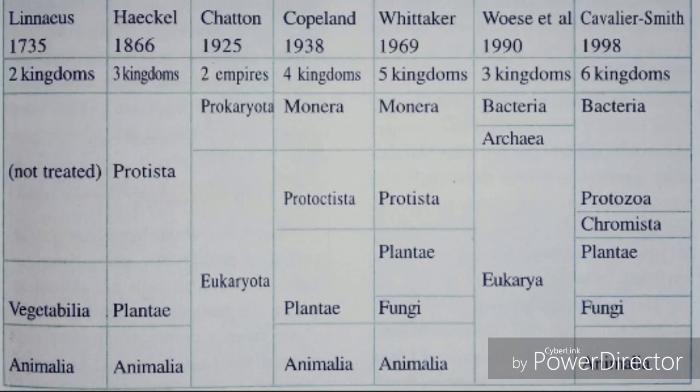Now let us see different classifications done by great taxonomists. The first one, on the extreme left, is the classification given by Carolus Linnaeus, the pioneer of taxonomy. The most significant one is Whittaker's Five Kingdom classification, proposed by Robert Whittaker.